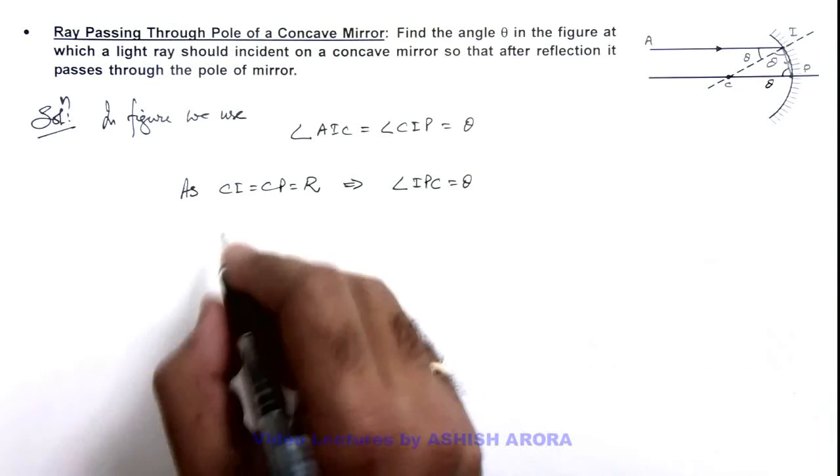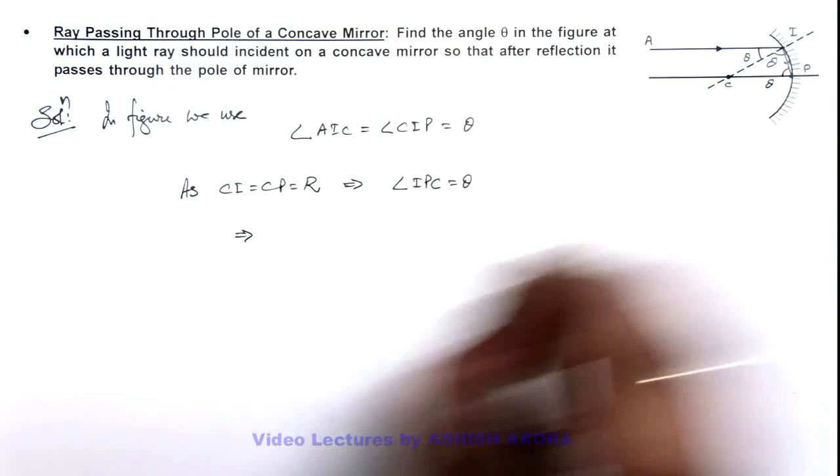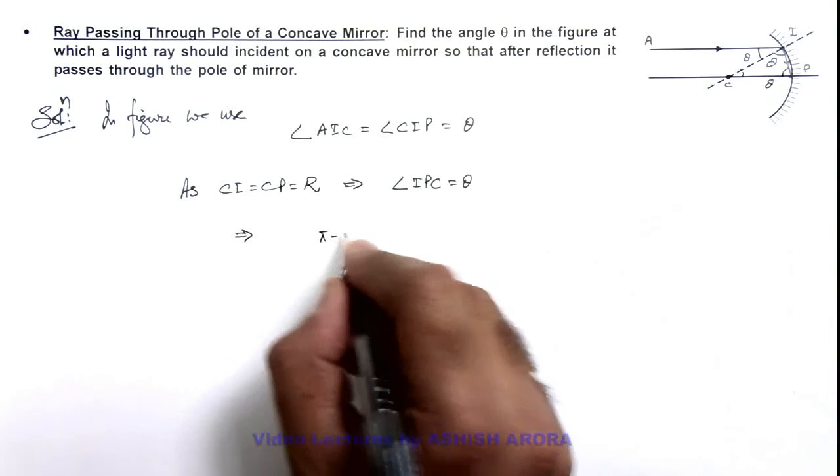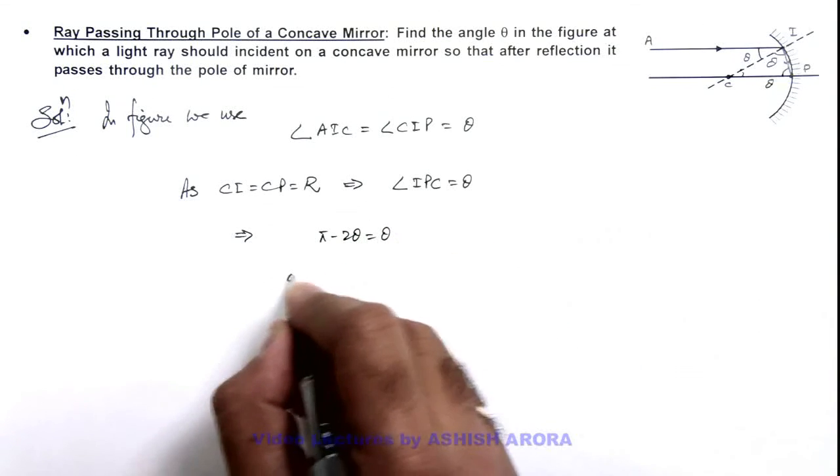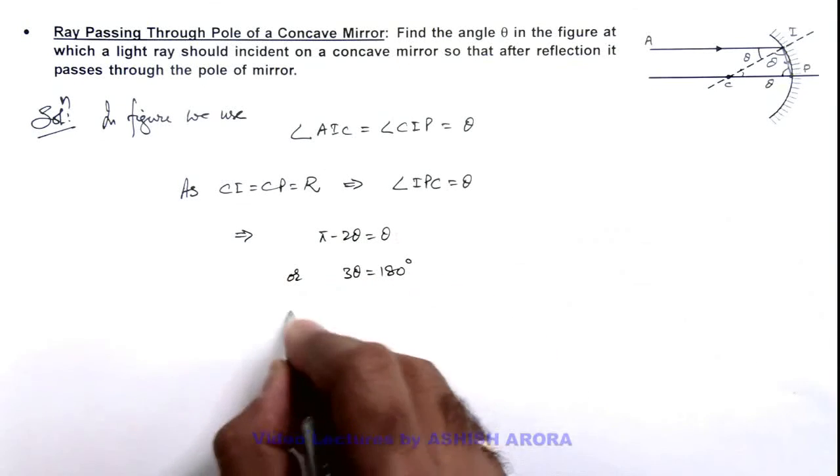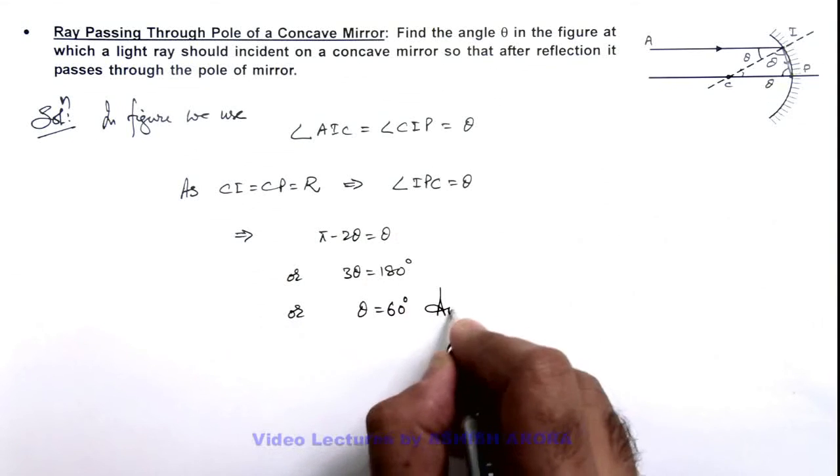So here we can write this angle is pi minus 2 theta. This is also theta. So we can write pi minus 2 theta is equal to theta, or we can write 3 theta is 180 degrees. The value of theta is equal to 60 degrees. That is the answer to this problem.